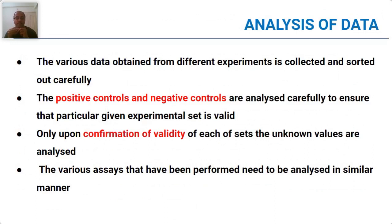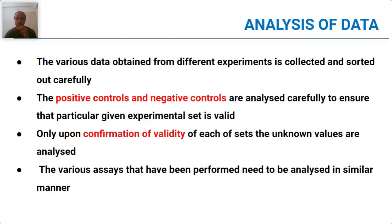Once you have collected copies of the data, you have to analyze it. Various data from different experiments first needs to be analyzed. It's important to know whether that data can be considered for writing results or whether you have to repeat the experiment — that's where positive and negative controls come in. Upon confirmation of validity of each set of unknown values and once you analyze, it goes for data analysis. If controls are not correct, the data has to be eliminated and you have to make new data before writing for the thesis.